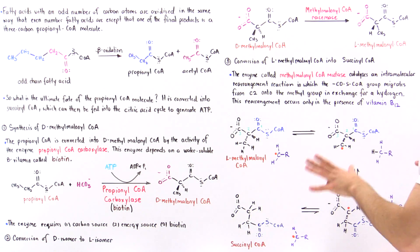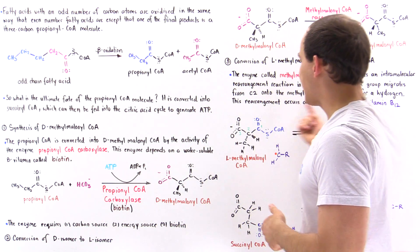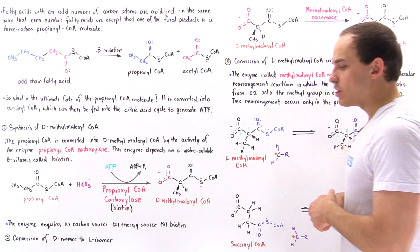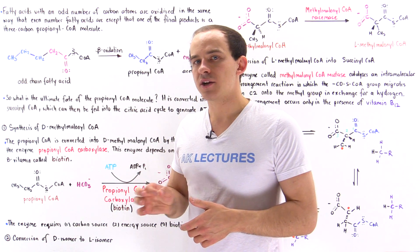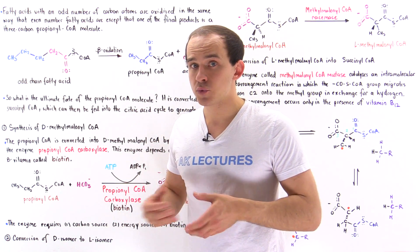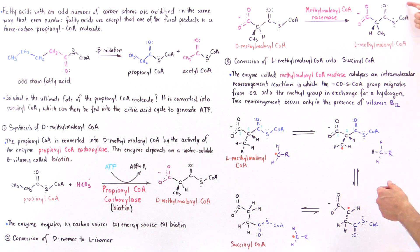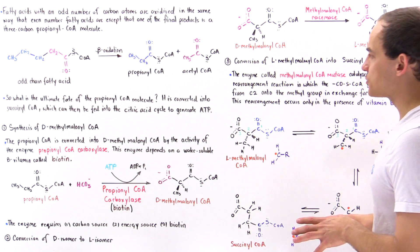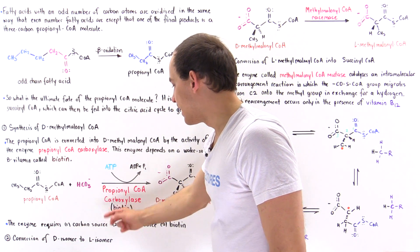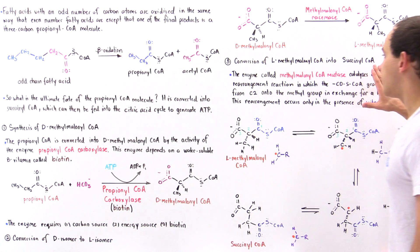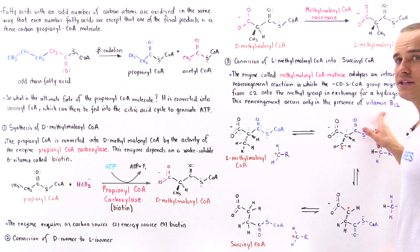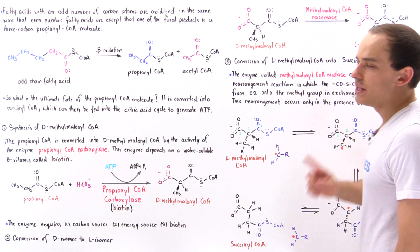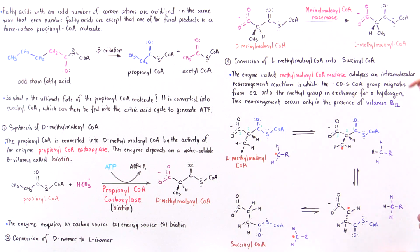Step number 3 is catalyzed by methylmalonyl coenzyme A mutase. It catalyzes an intramolecular rearrangement reaction in which a group is transported from carbon number 2 onto the methyl group, exchanging an H atom in the process. Just like the carboxylase in step 1, this mutase requires vitamin B12. Without vitamin B12, this reaction would not take place.